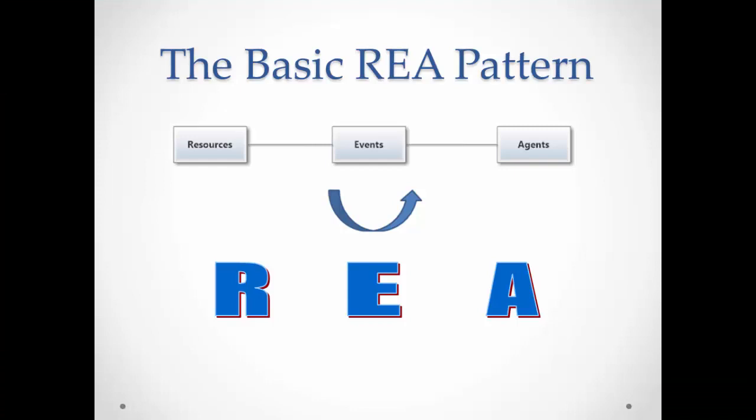The basic REA pattern describes the resources, events, and agents in a business process. That curved blue arrow indicates that two or more events can be associated with each other within the same process.